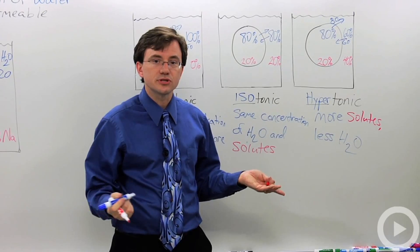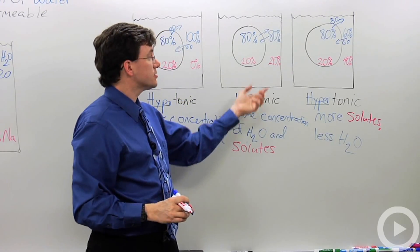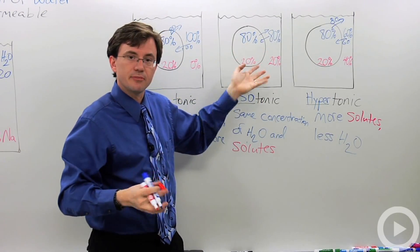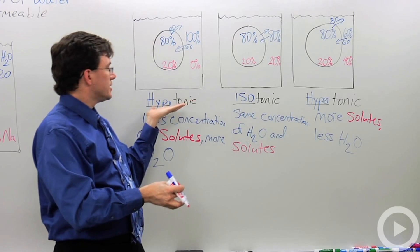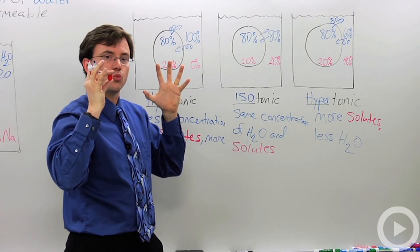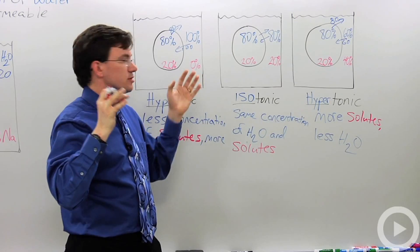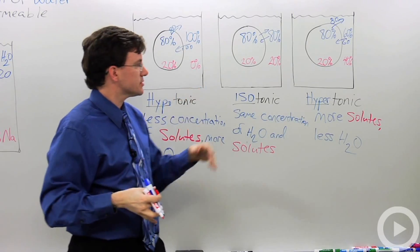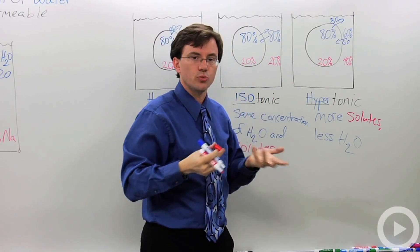So that's how you do osmosis. So in an isotonic solution, a cell will just stay the same. It will be in equilibrium. A cell in a hypotonic solution will swell up, and if it's a plant cell, its wall will keep it from bursting. But animal cells will typically pop, especially red blood cells. In a hypertonic solution, a cell will shrivel or wilt.